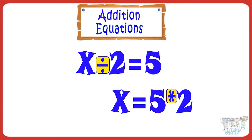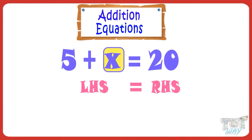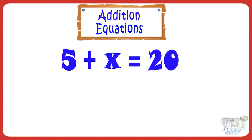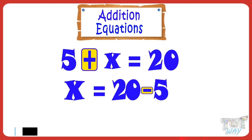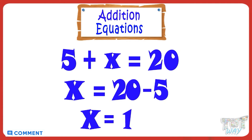We will see many examples to clear our concept, and you will find it very easy at the end. So we have 5 plus X equals 20. Retaining only X on LHS, it becomes X equals 20 minus 5, as the sign before 5 is plus on LHS — no sign means a positive number or plus sign — so it will be minus on RHS. 20 minus 5 equals 15, so X equals 15.